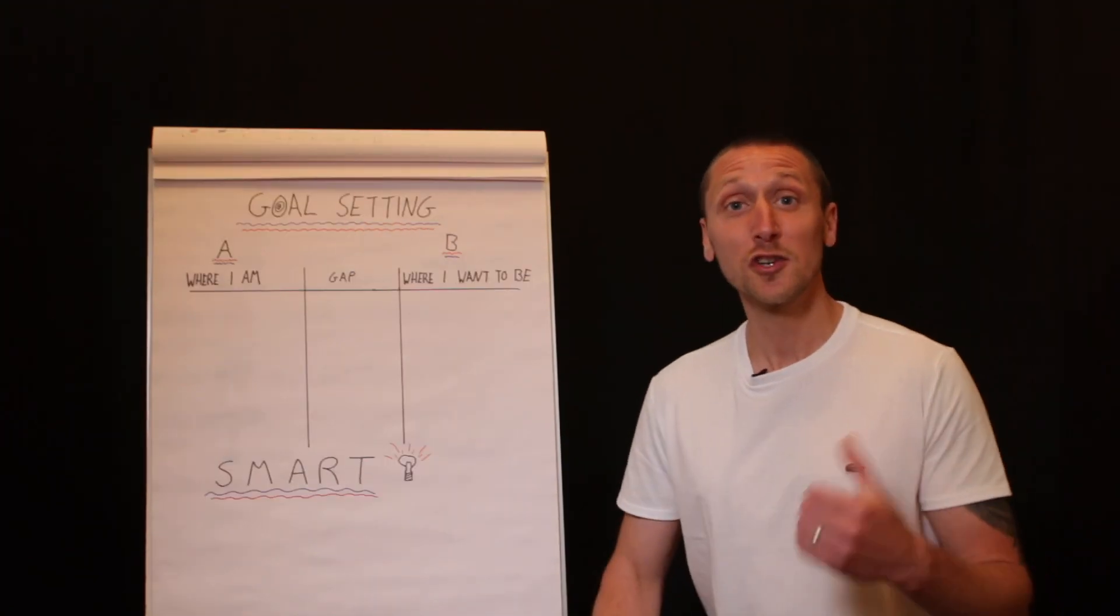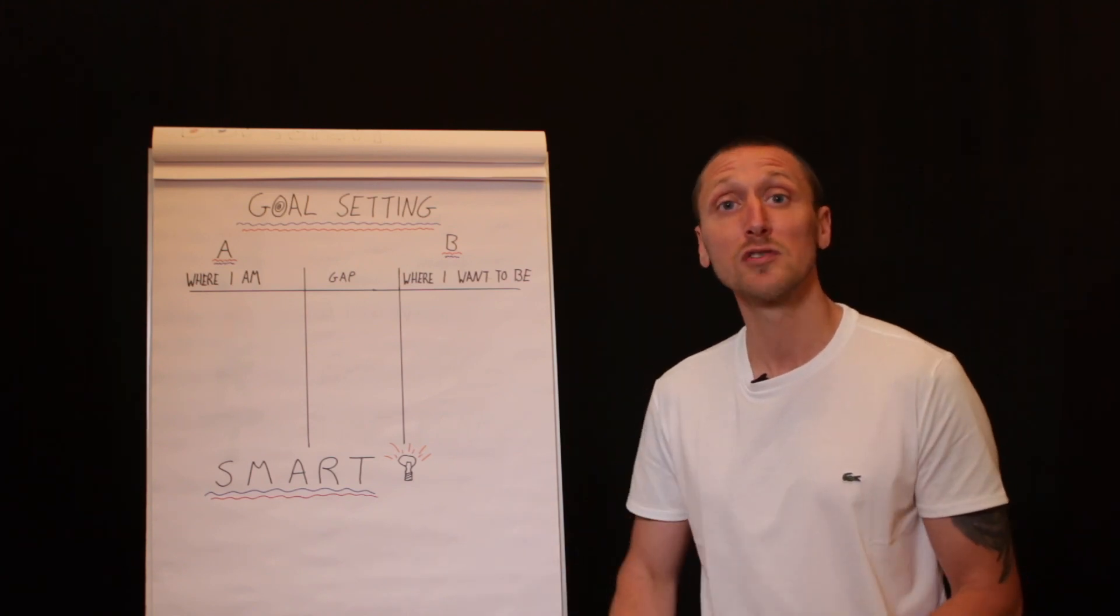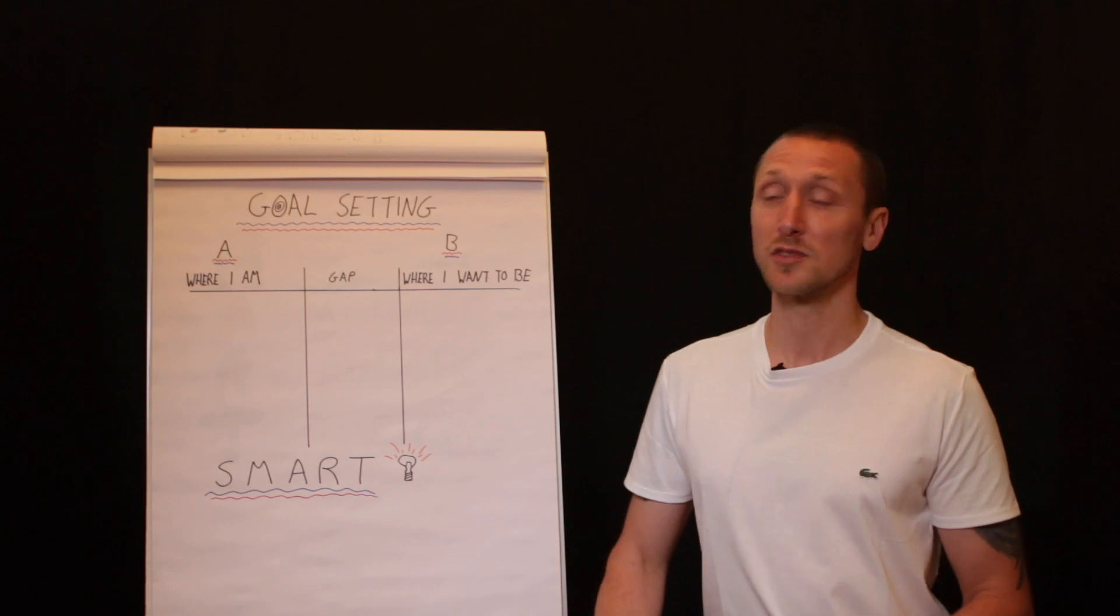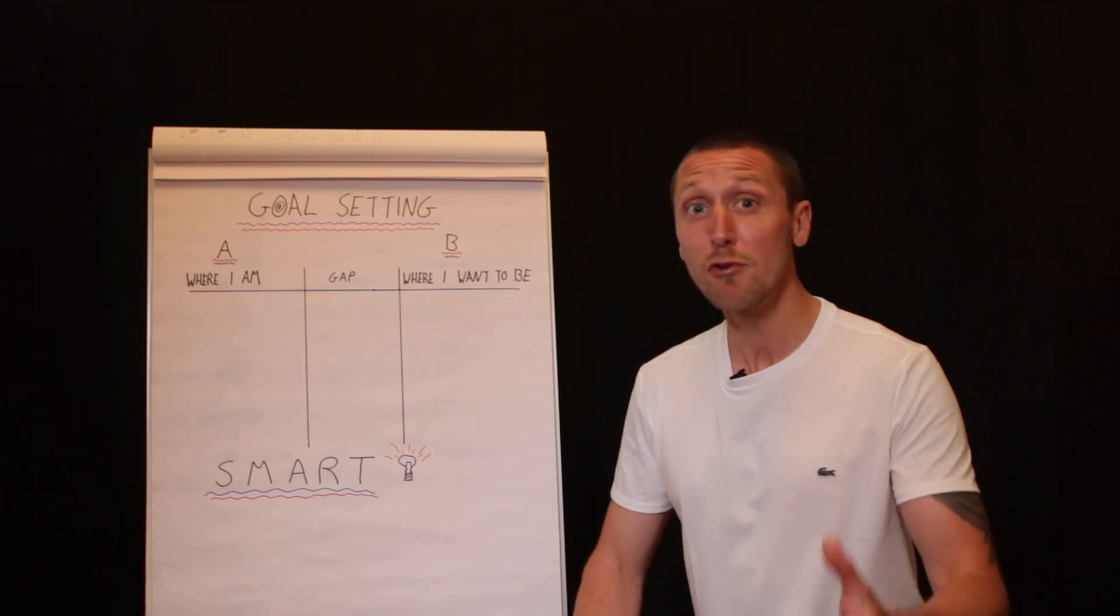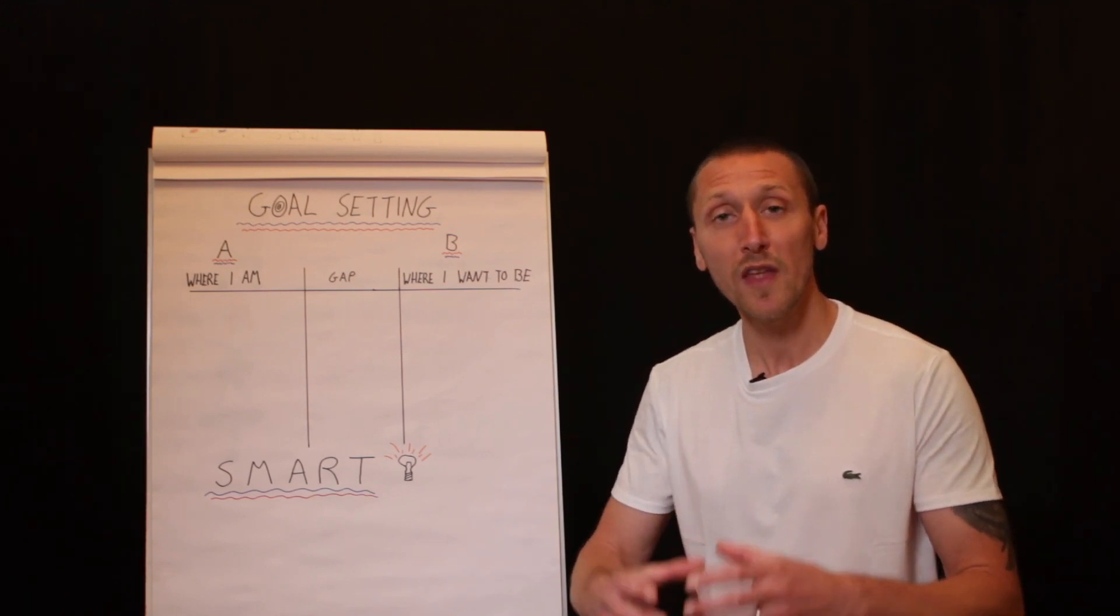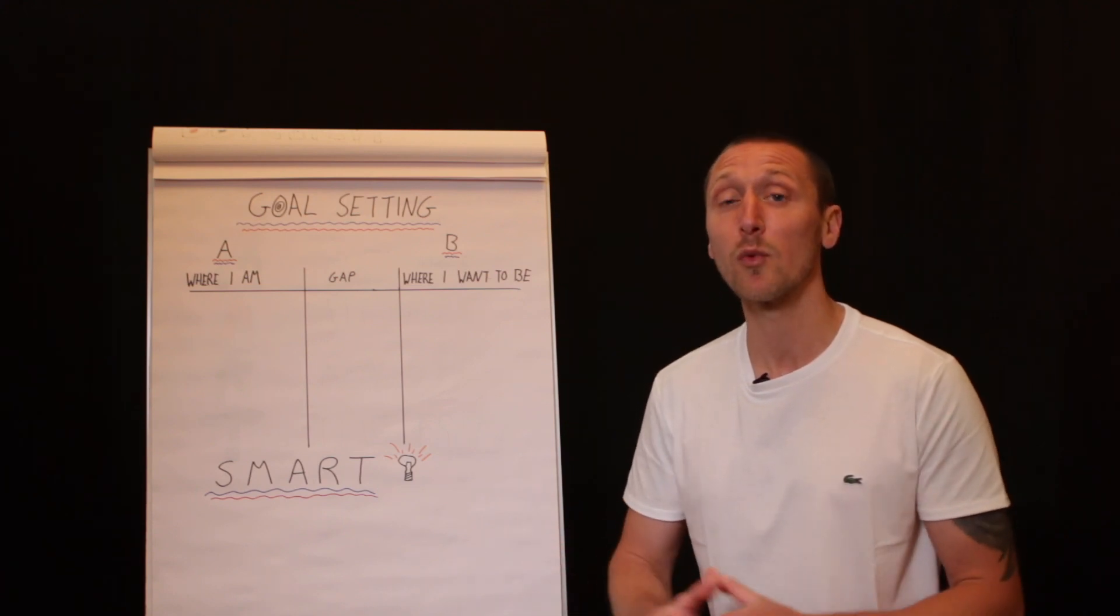Welcome to the first exercise. You can download this from resources or just get a piece of paper, draw two lines down the middle, you'll end up with three columns. Column A is where you are right now, and being brutally honest with where you are, because with that awareness, that's the first step to any change.